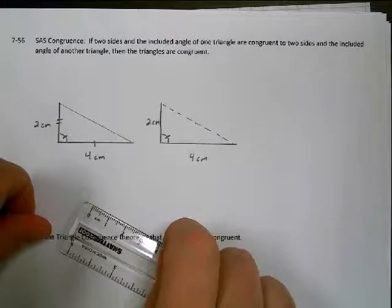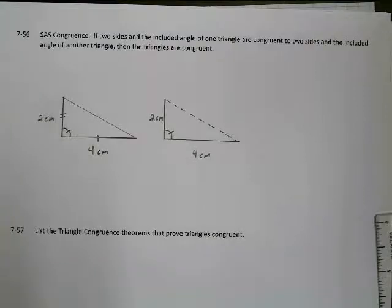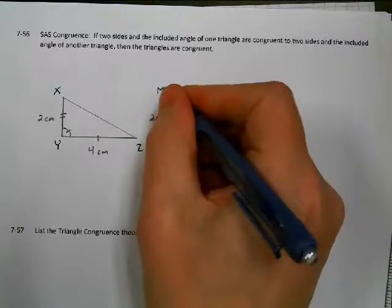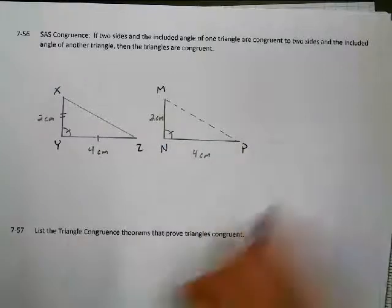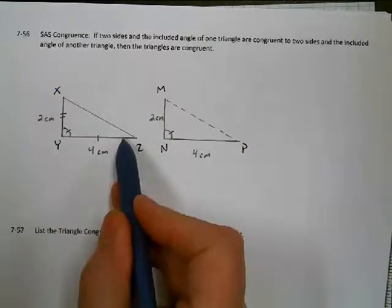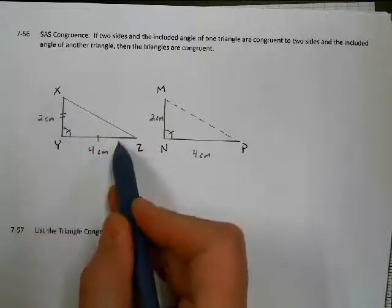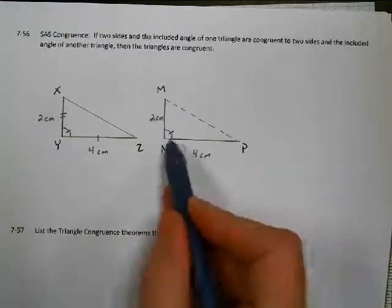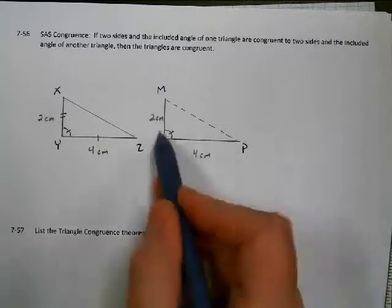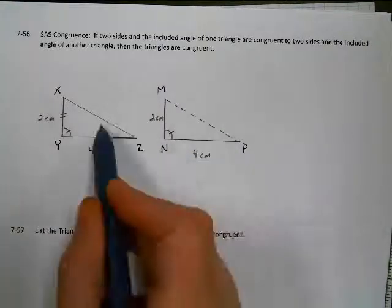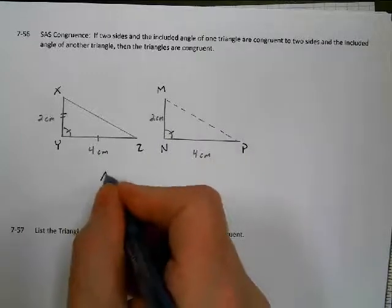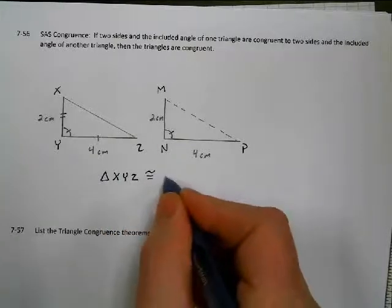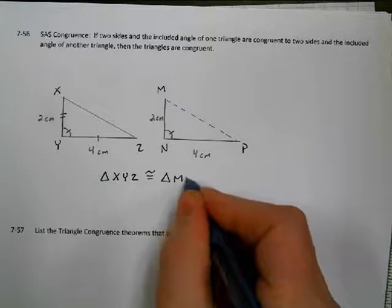So we can say: let's call this triangle XYZ and this one MNP. Since we have a side, an angle, and a side — with that angle included right in between — the same side, the same included angle, and the same side on the other triangle lock the last side in place so they have to be the same. Triangle XYZ is congruent to triangle MNP by Side-Angle-Side congruence.